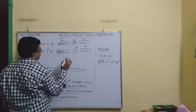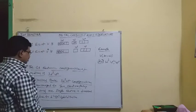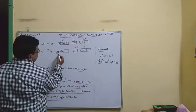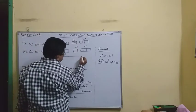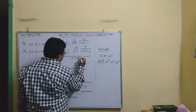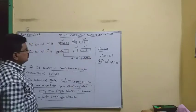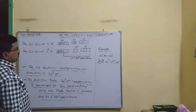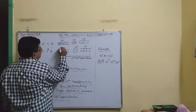So we have two electron pairs and one single electron in the excited state. Due to sp3 hybridization — D2sp3 hybridization — vanadium carbonyl shows paramagnetic property, because there is one single electron present.